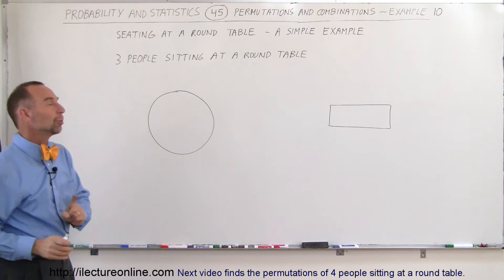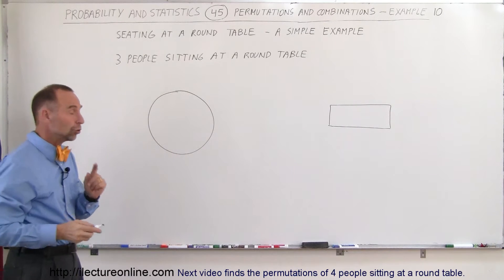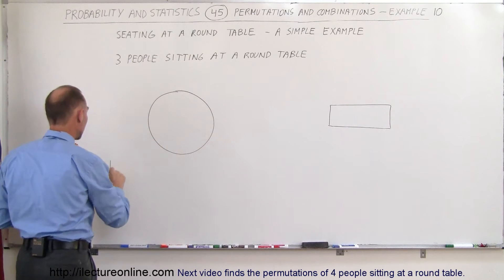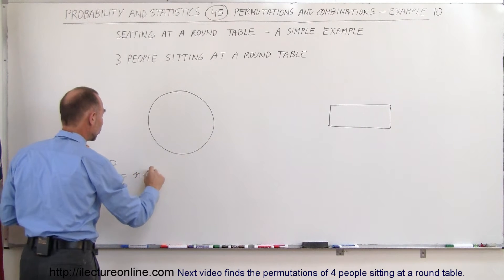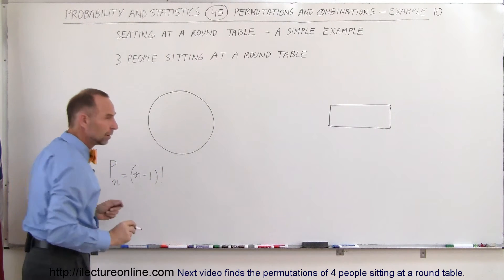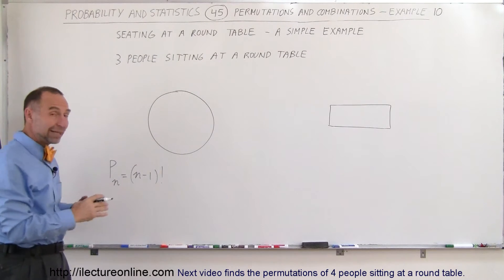Because of that, the number of permutations that you can have in the way people sit around the round table is determined simply by the number of permutations for n people is simply equal to n-1 factorial, because the first person doesn't matter. If it does matter, it would be n factorial.